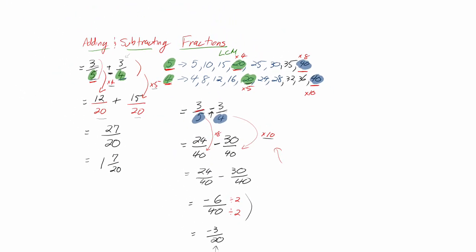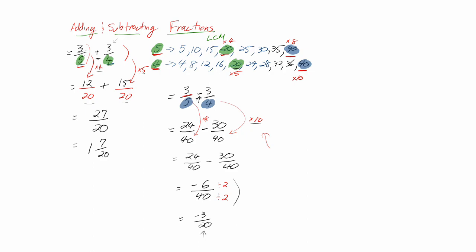Anytime we add and subtract fractions, we need a common denominator, and the answer will always have that denominator. Just like here, we used 40, the answer had 40, and then we reduced it to 20.